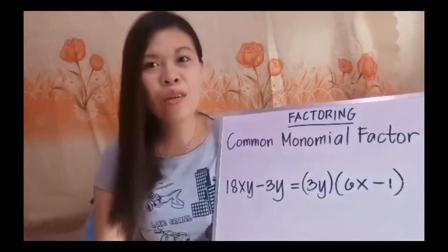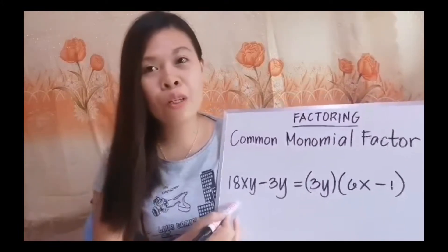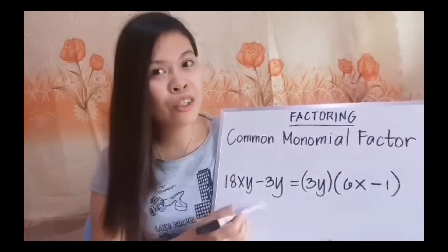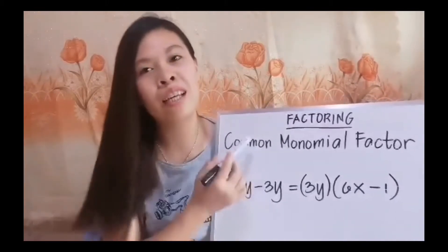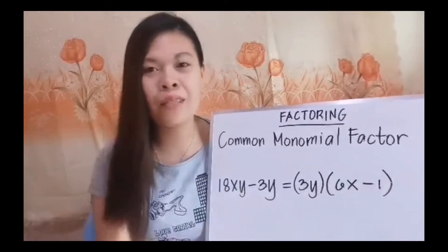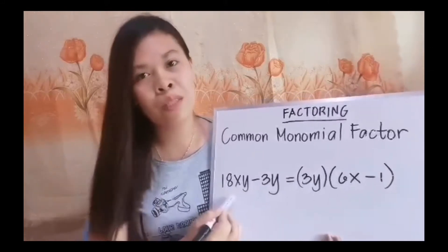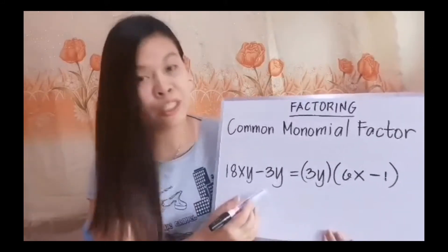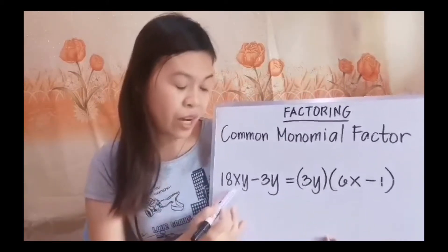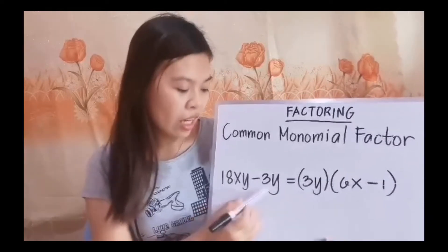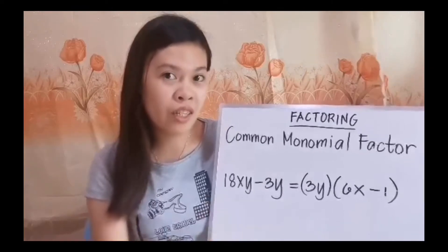So, it's not a simple trinomial and it's not a difference of two squares, so we have no choice but to get the factors of this polynomial by getting the common monomial factor. We are just going to consider both terms that we have. We have two terms here — this is a binomial. We just have to consider the terms and try to identify if there is a common factor among the numbers and the variables.